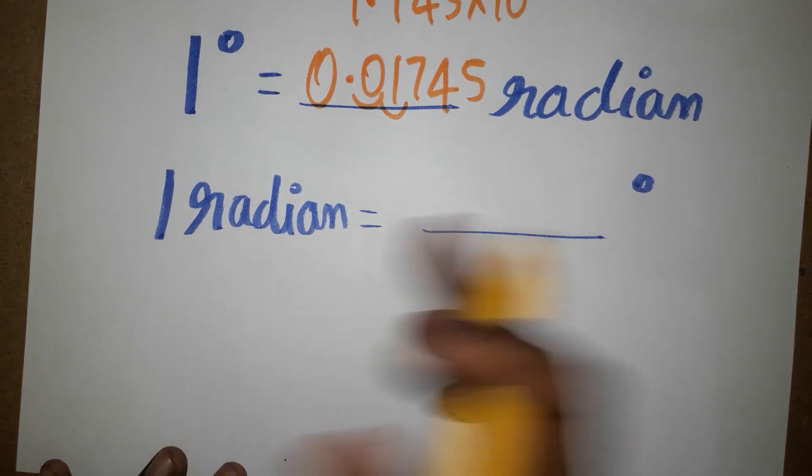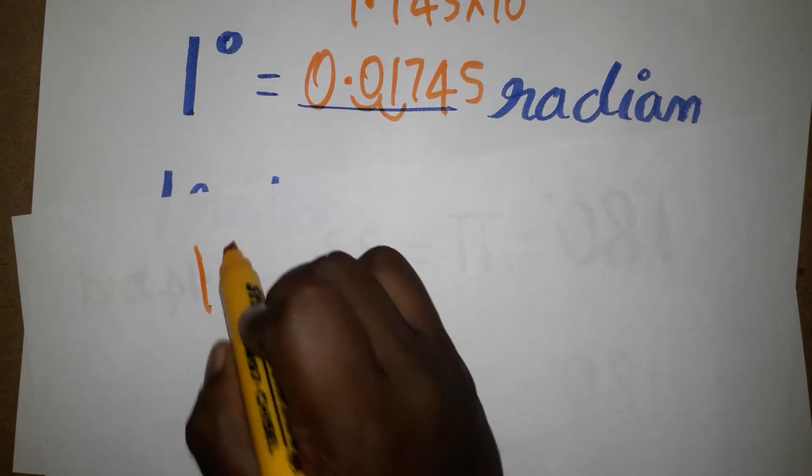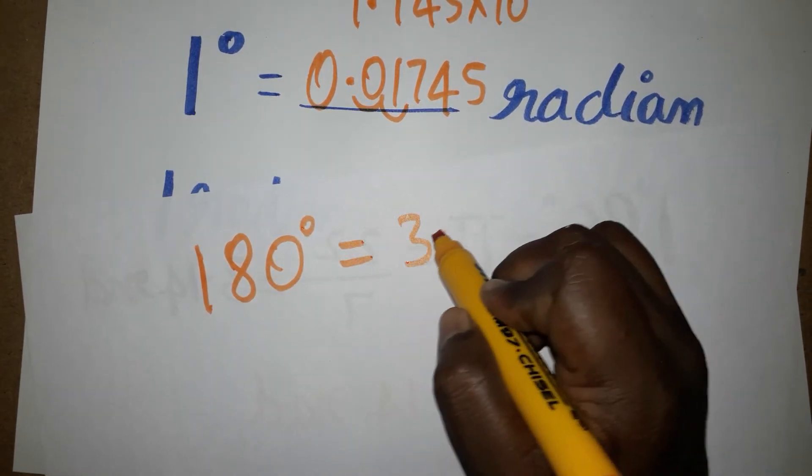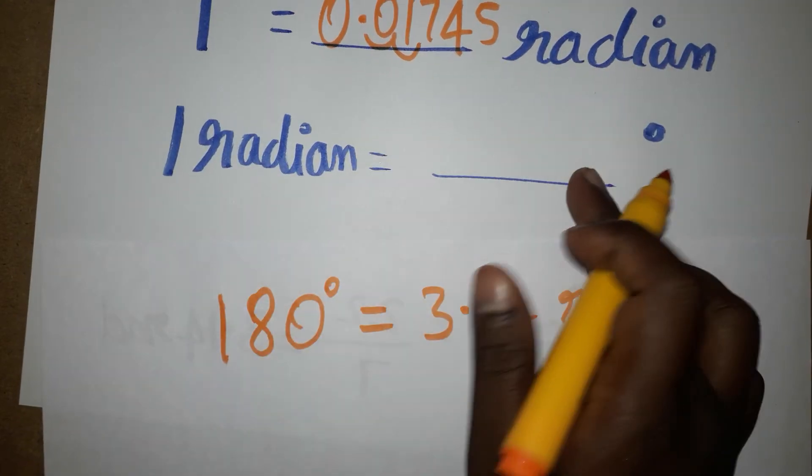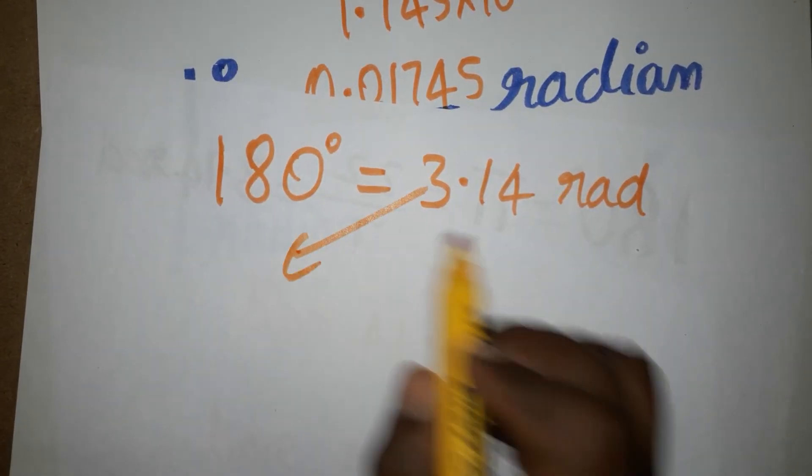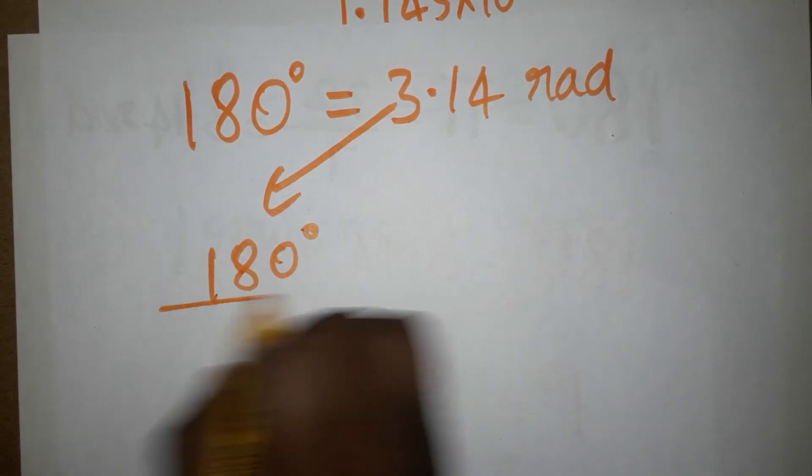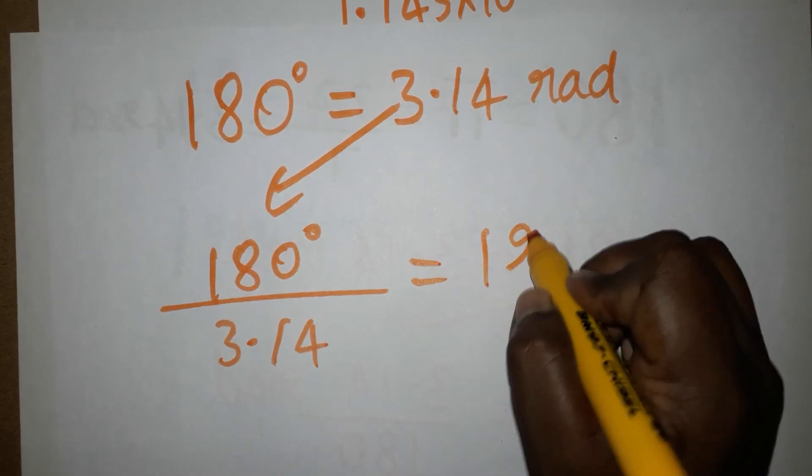Next, 1 radian equals how many degrees? We already know 180 degrees equals 3.14 radians. So bringing 3.14 as the denominator, 180 degrees divided by 3.14 equals 1 radian. This value gives us 57.3 degrees.